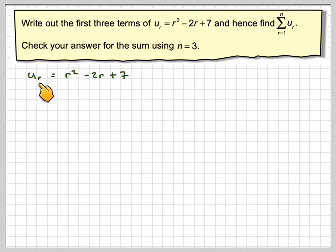So we've got the terms of the sequence. U_r is r squared minus 2r plus 7. So U_1 will be 1 squared minus 2 times 1 plus 7. That gives me 6, 1 take away 2 plus 7.